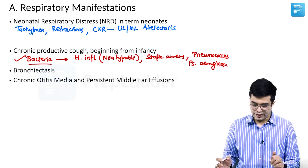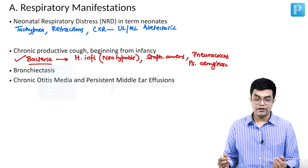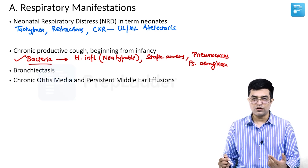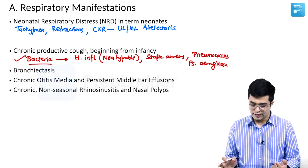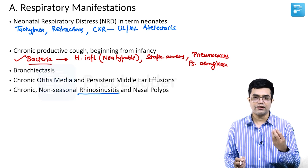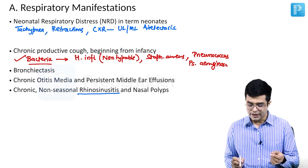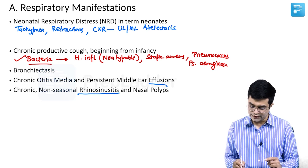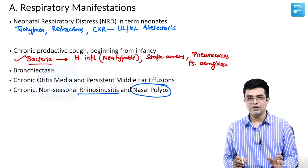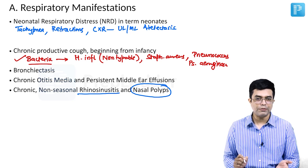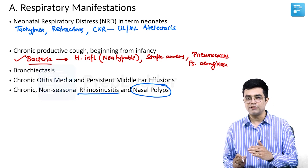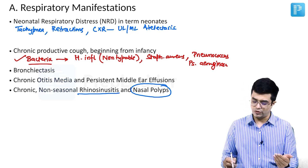Other than bronchiectasis, these children have difficult-to-manage, repeated chronic otitis media and persistent middle ear effusions. There will be chronic non-seasonal rhinosinusitis, nasal stuffiness, nasal discharge, sinusitis, and nasal polyps. There is a table in Nelson mentioning features of Kartagener syndrome. The table does not talk about nasal polyps, but the text and review articles do.